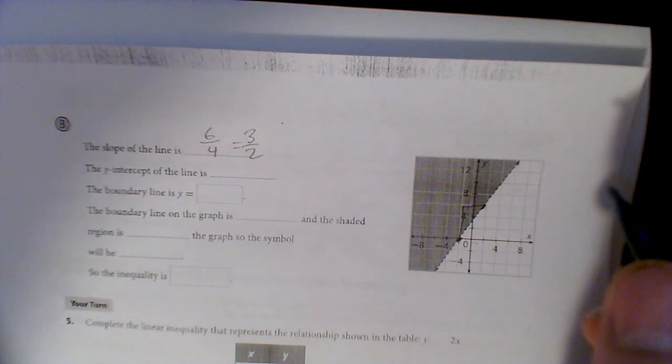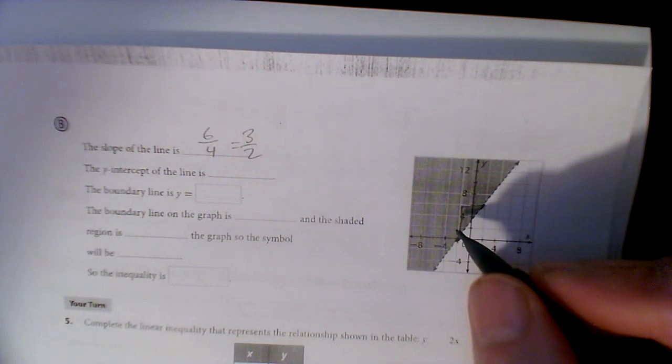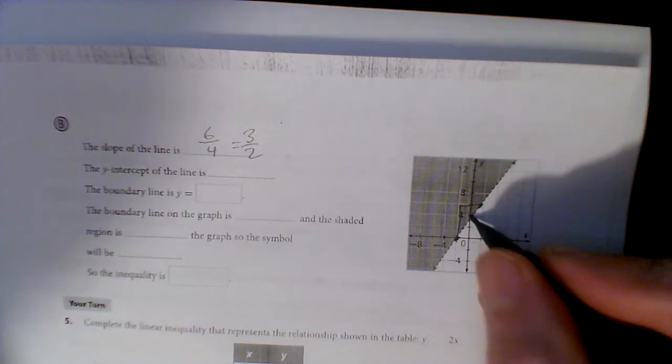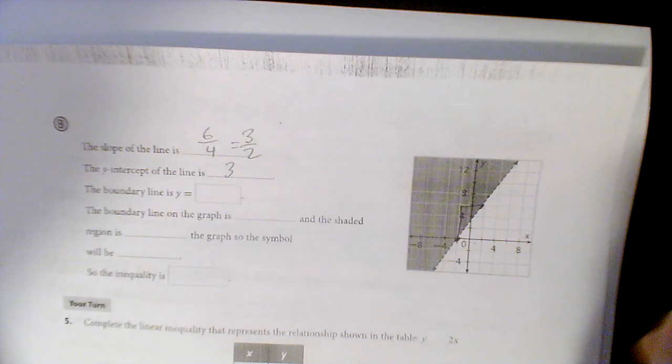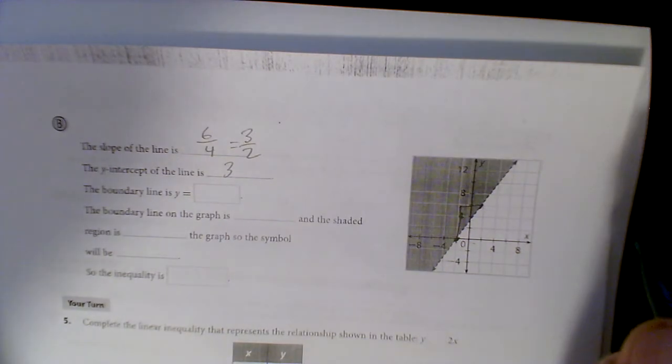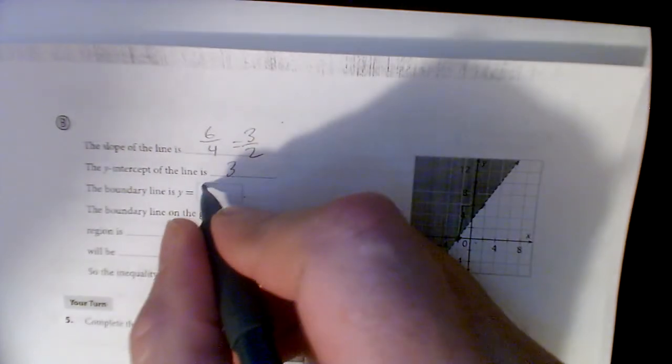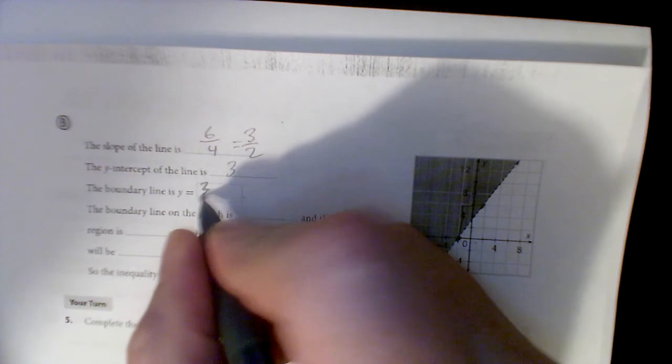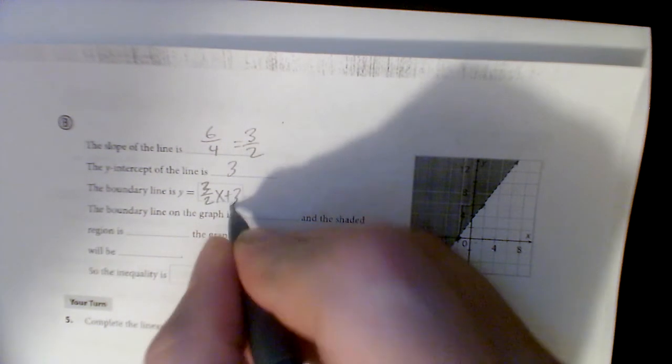It's got a y-intercept right there that looks to be in the middle of two and four, so we'll say the y-intercept is three. The boundary line is y equals three halves x plus three, is what I'm getting.